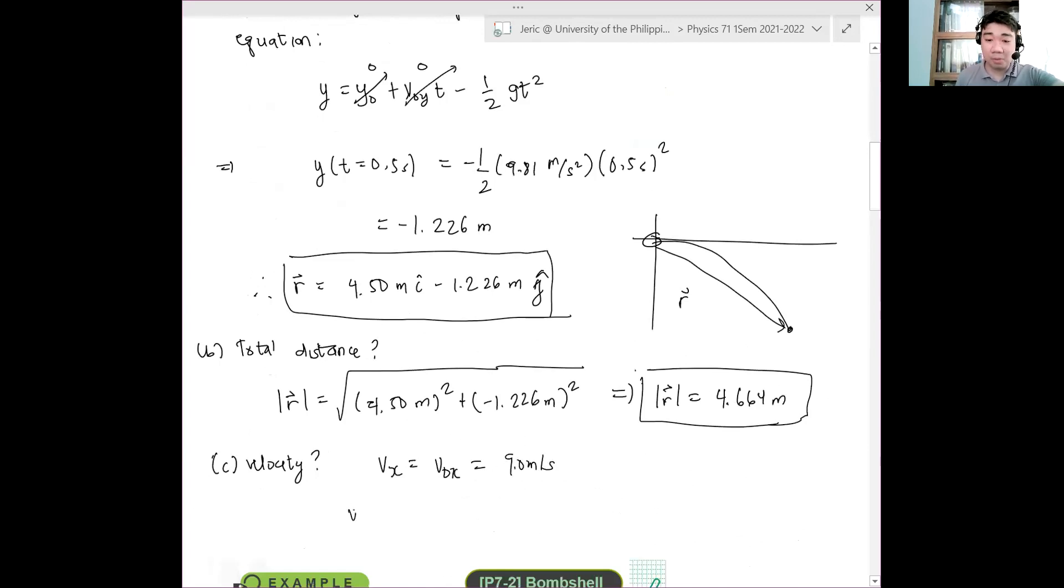What about the y component? Your y component, what happens there? You use your freefall equation. So we have V naught y minus g t. But what is V naught y?